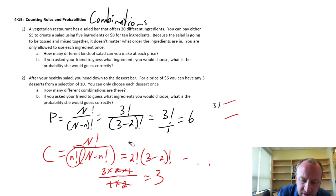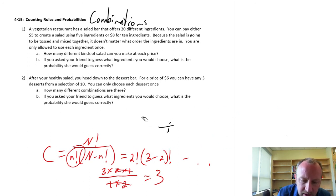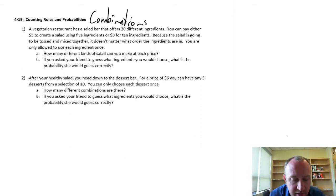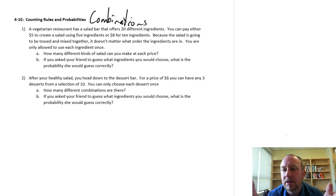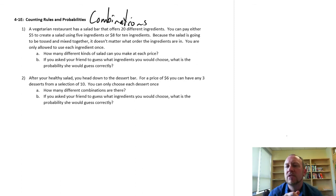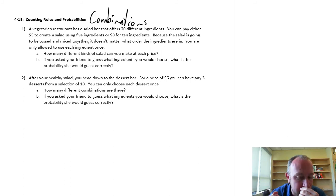So now we're going to a vegetarian restaurant and we have a salad bar. It has 20 different ingredients. We can get a small salad of 5 ingredients, or a large salad of 10 ingredients. The salad is going to be all mixed together, so it doesn't matter what order we put them in — we're clearly talking about combinations. We can only use each ingredient once, so how many different combinations are there at each price?